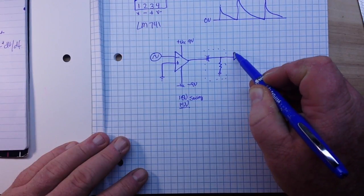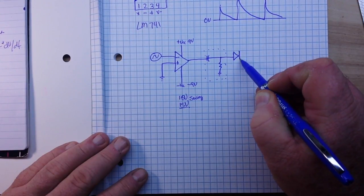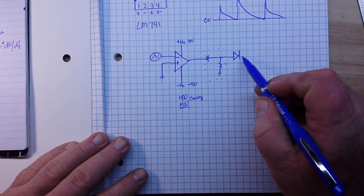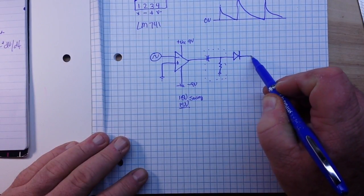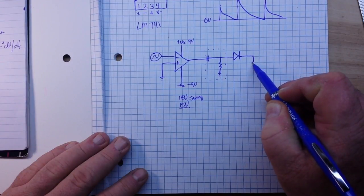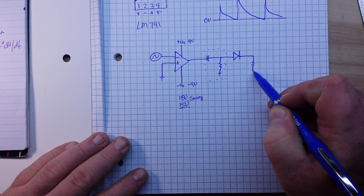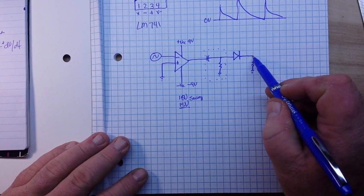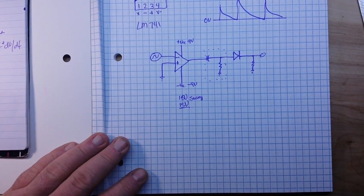Then we will use a diode to block off the negative voltage and a load resistor, and there's our output. And that's the circuit.